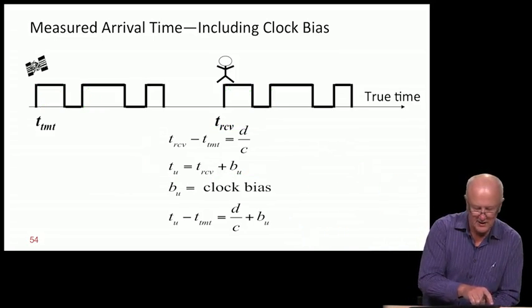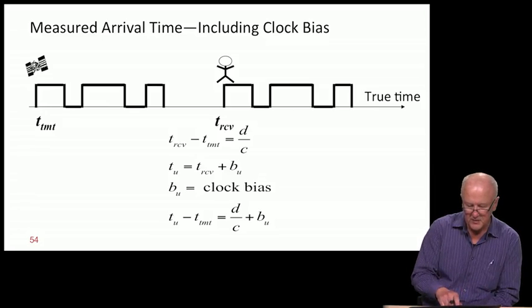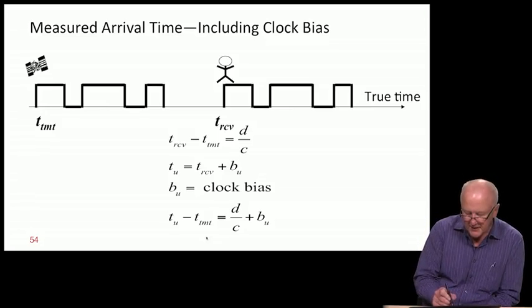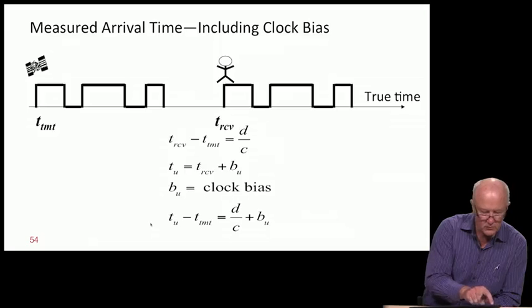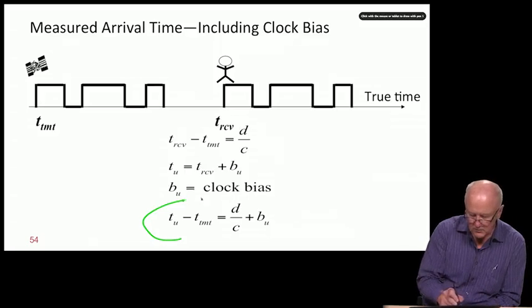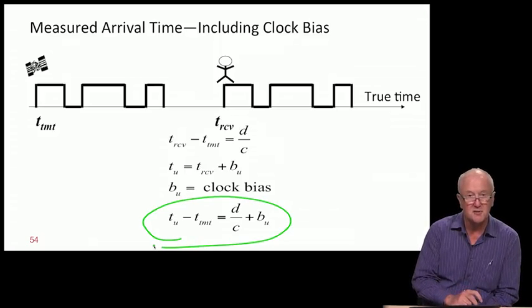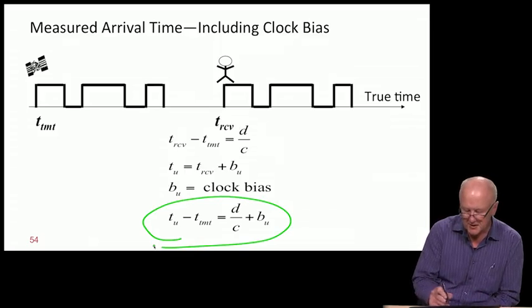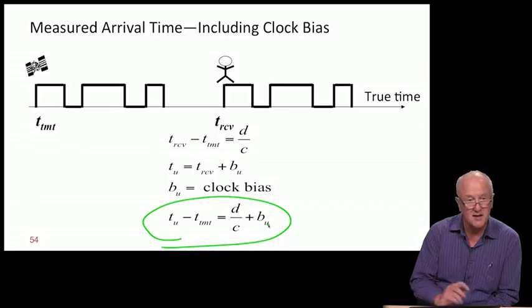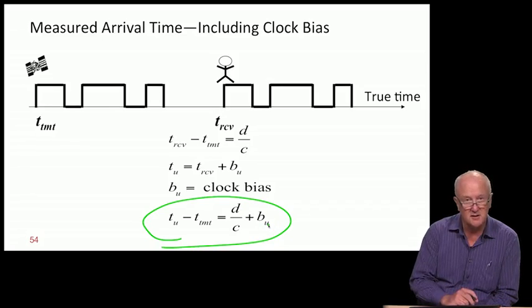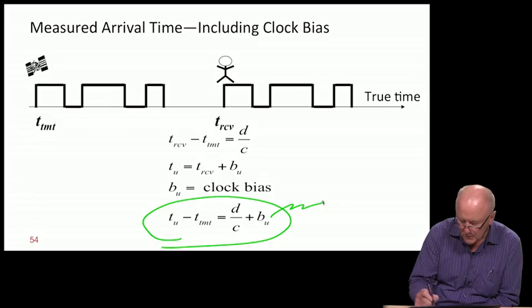Here's t_u inclusive of the bias minus t_transmit. This is our first appearance of the pseudorange, because the right-hand side is not only equal to distance but distance biased by this unknown clock offset. Hence the name pseudo.